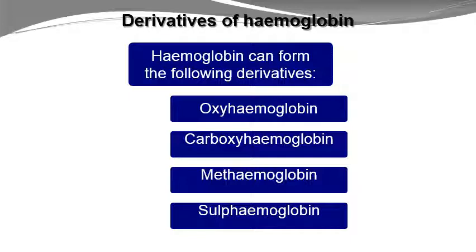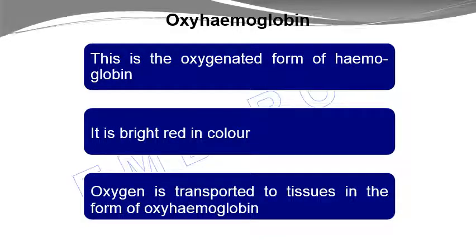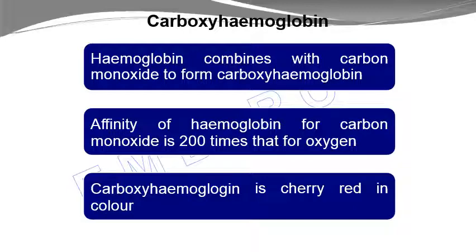Hemoglobin has several derivatives. Oxyhemoglobin is the oxygenated form — it is bright red in color and transfers oxygen to tissues. Carboxyhemoglobin forms when hemoglobin combines with carbon monoxide. The affinity of hemoglobin for carbon monoxide is much higher than for oxygen, and carboxyhemoglobin is cherry red in color. Patients poisoned with carbon monoxide show this cherry red skin color.